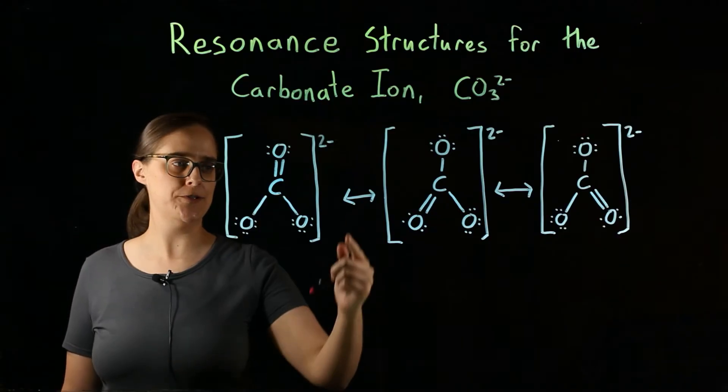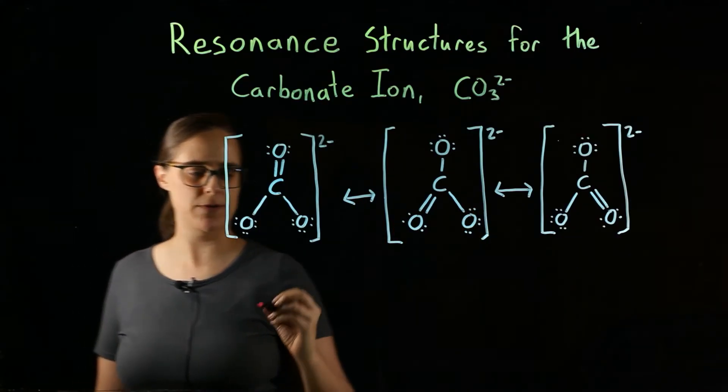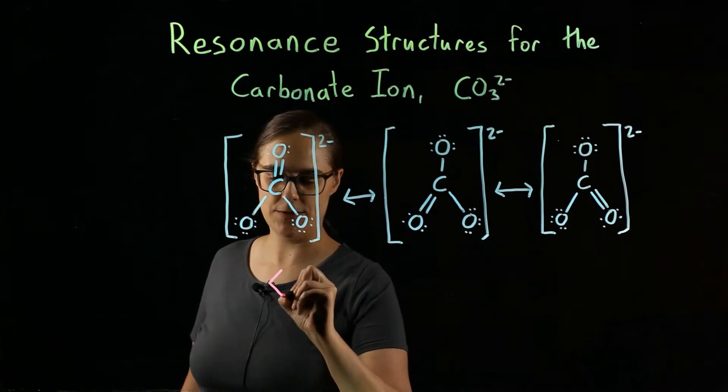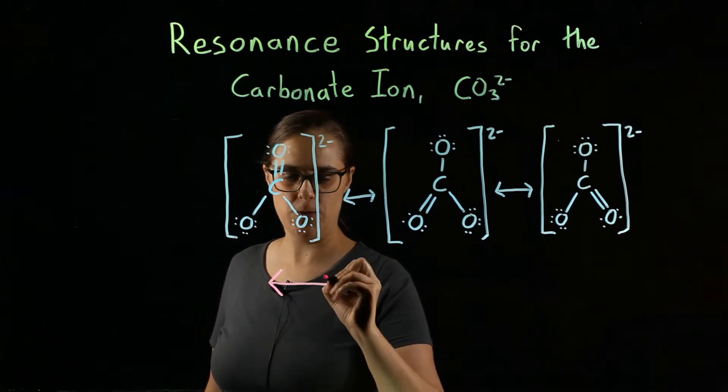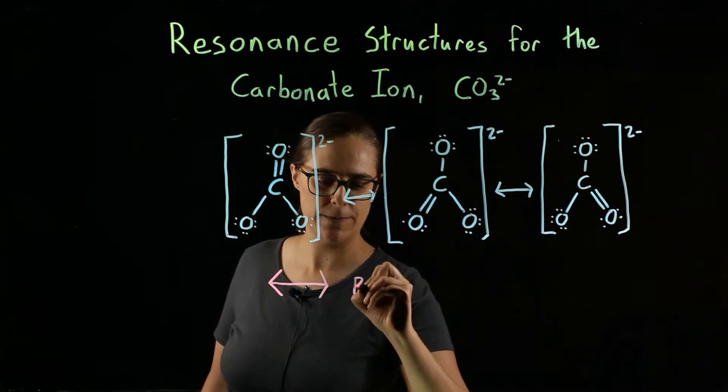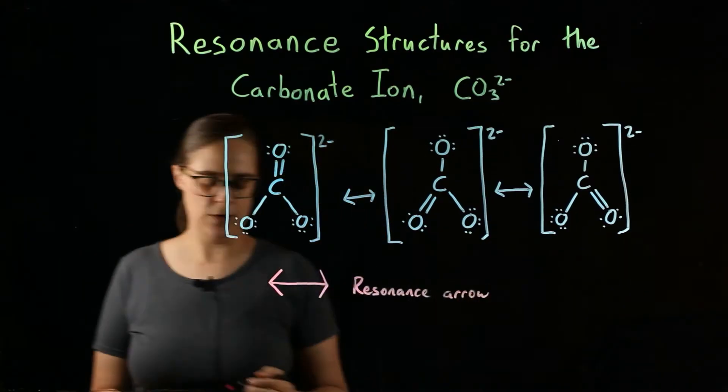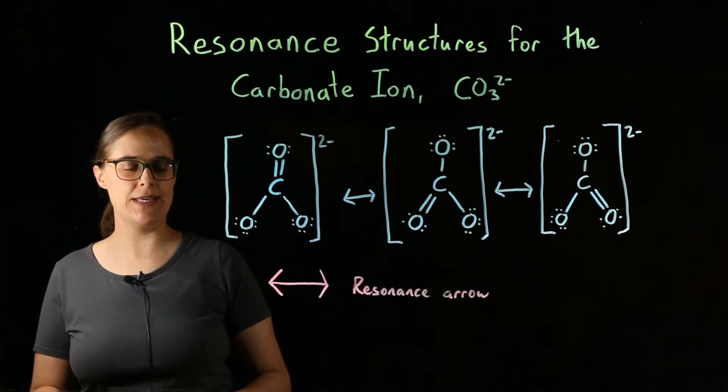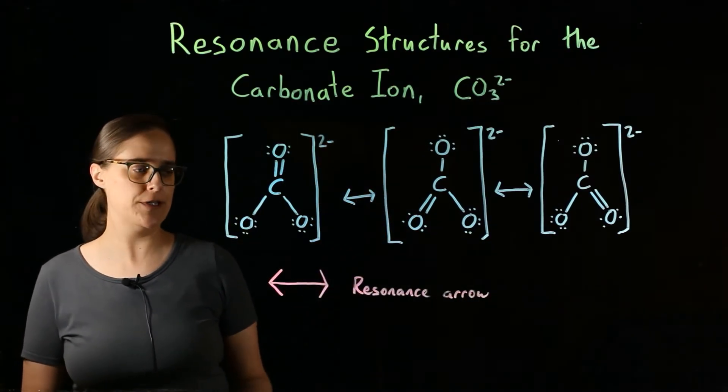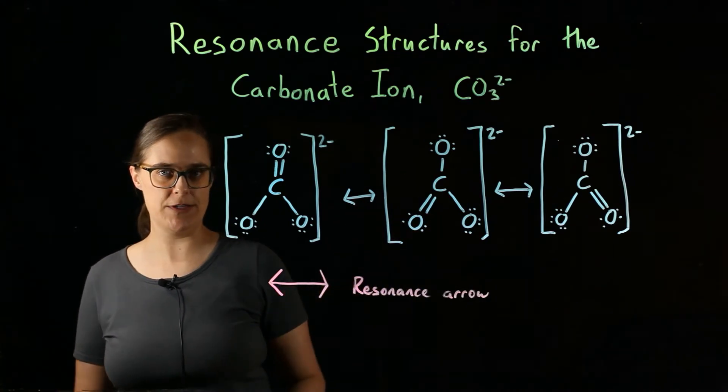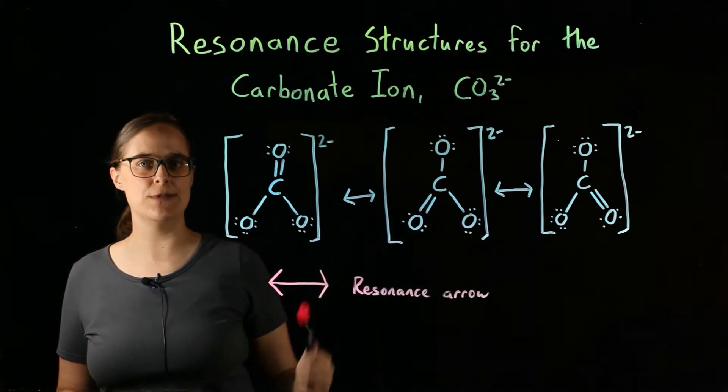Resonance structures always need to be separated by the same type of arrow. A resonance arrow is a two-headed arrow with a single line in the middle. Chemistry is picky about the specific type of arrow you're drawing. This specific type of arrow means it is separating resonance structures.